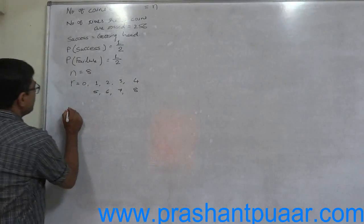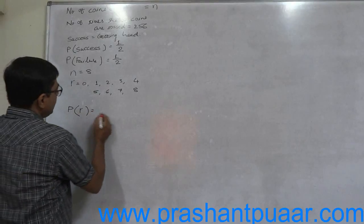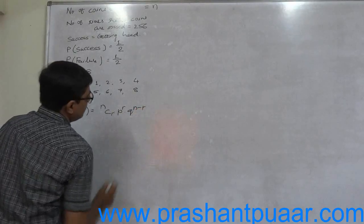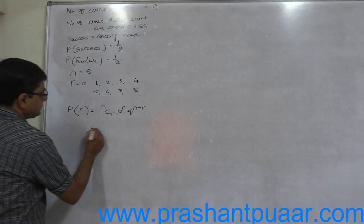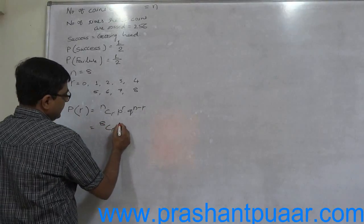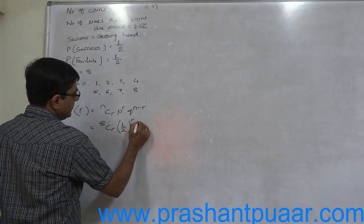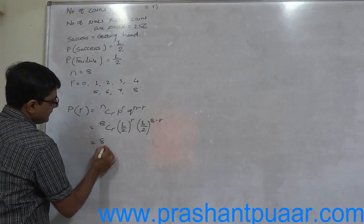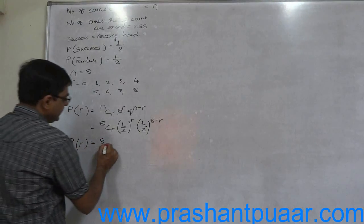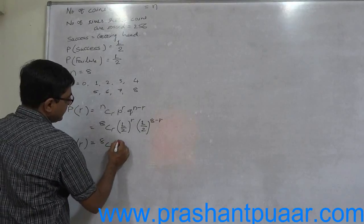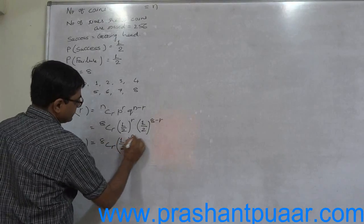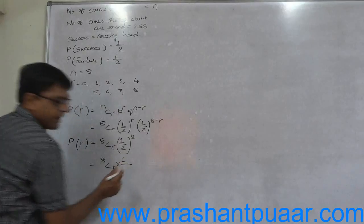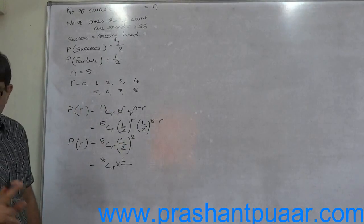Now according to binomial formula, probability of R successes is NCR into P raised to R into Q raised to N minus R. Now let us substitute the values. This is 8CR into half raised to R into half raised to 8 minus R. So ultimately this is probability of any R success is 8CR into half raised to 8. That means 8CR into 1, and 2 raised to 8 means 256.